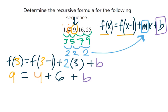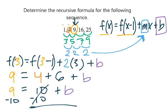So then we get 9 equals 10 plus b. If we do a little rearranging, subtract 10 from both sides, then we're going to cancel out the 10s here. And 9 minus 10 is negative 1, so that means what we're left with here is b equals negative 1.